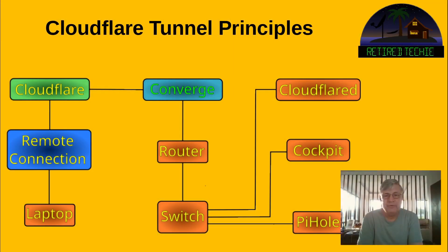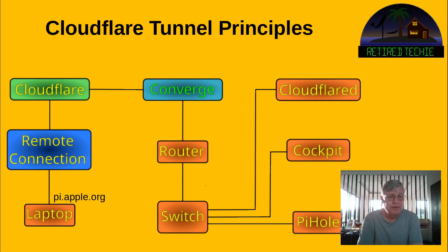Let's get started by talking about the setup. I'm assuming I've got my laptop at a remote place — could be Starbucks, more than likely it's my brother-in-law's place. So it's a remote connection from my laptop. I'm going to type into my browser bar: pi.apple.org. Pi is a subdomain, apple.org is the domain — these are just example domains to make a point.